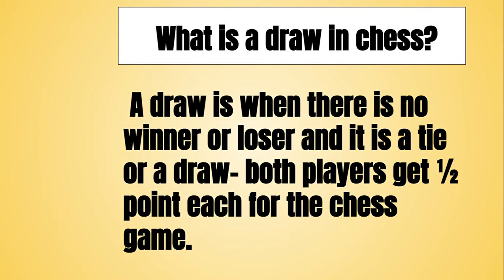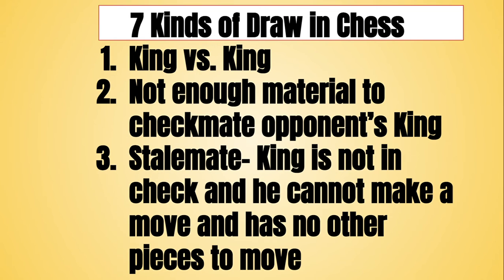Hello everyone! Today we will be talking about what is a draw in chess. Basically a draw is neither a win or a loss — it is a tie, where both players get half a point each for the chess game. Especially if they're playing in a tournament, half a point can come in very handy. So today I'll be discussing seven types of draw in chess.